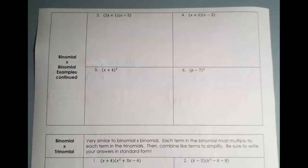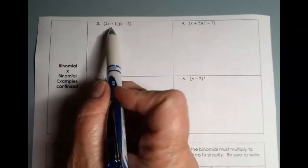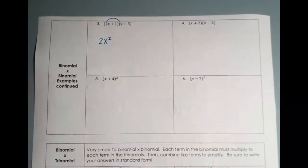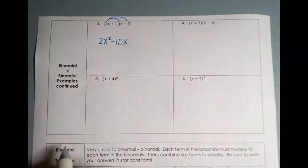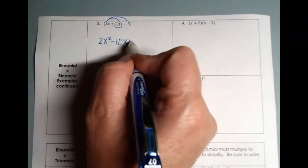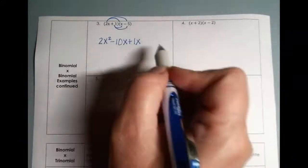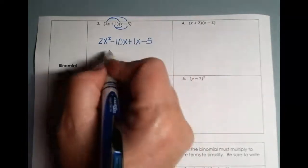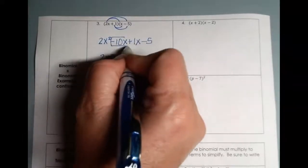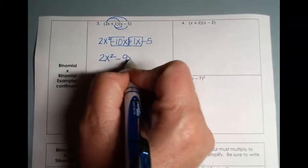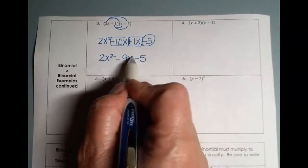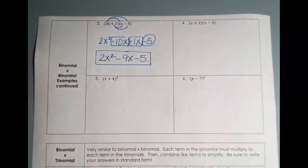Let's try number three: (2x+1)(x-5). We follow the same process — FOIL. First: 2x times x gives 2x squared. Outer: 2x times negative 5 gives negative 10x. Inner: 1 times x gives positive 1x. Last: 1 times negative 5 gives negative 5. Check for like terms — 2x squared stays; negative 10x plus 1x gives negative 9x; the constant negative 5 comes down. Two exponents, one exponent, no exponent — it's in standard form. That's our final answer.